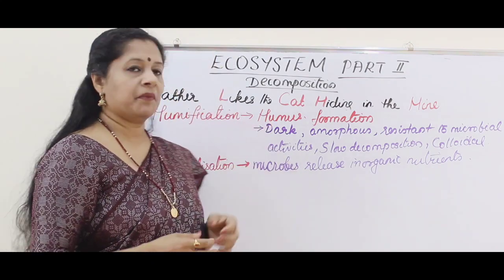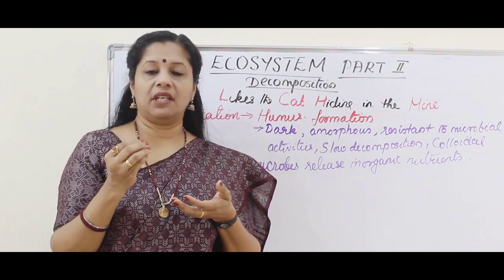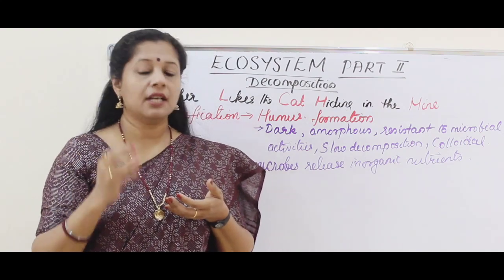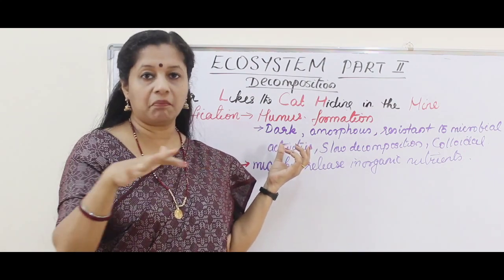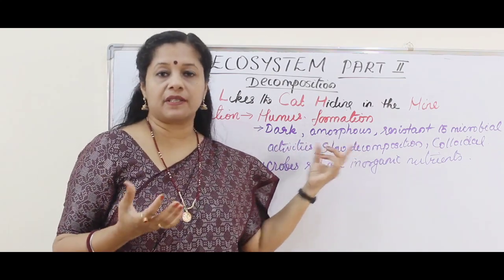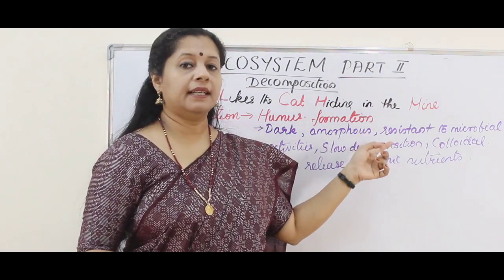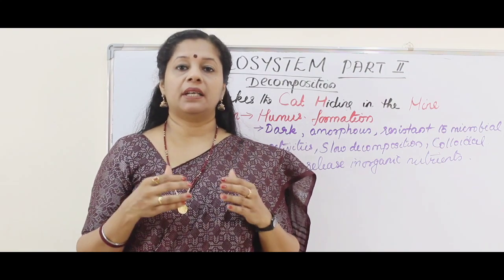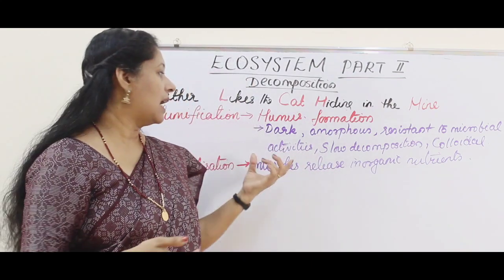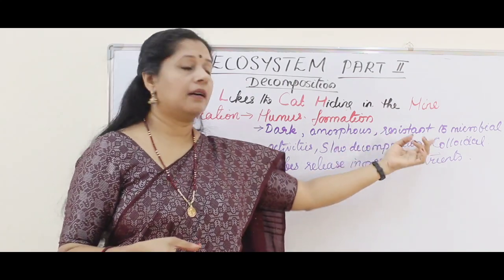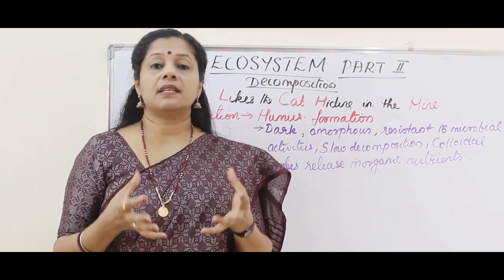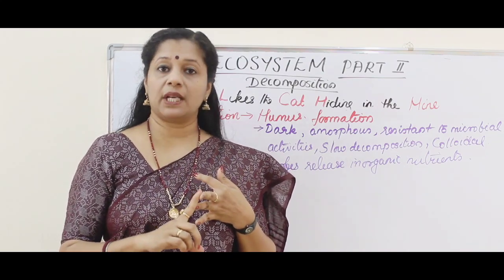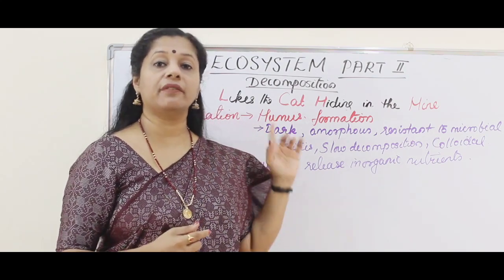The remaining complex organic substances form something called humus — a dark-colored covering over the soil. You may have learned about the soil profile: the top layer is humus, and the more humus there is, the better the soil fertility. Humus is dark, amorphous (no definite shape), and highly resistant to microbial action, making decomposition slow at this stage. Being colloidal in nature, it acts as a reservoir of nutrients.